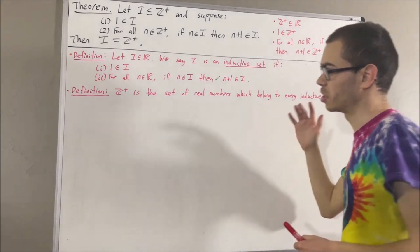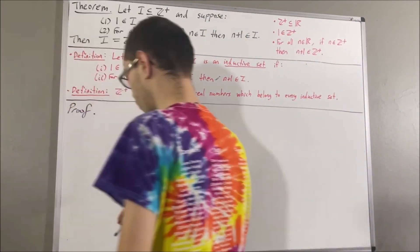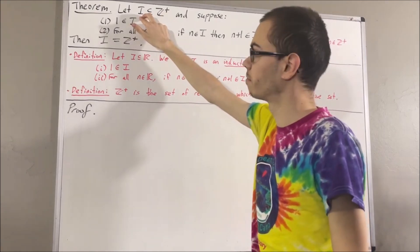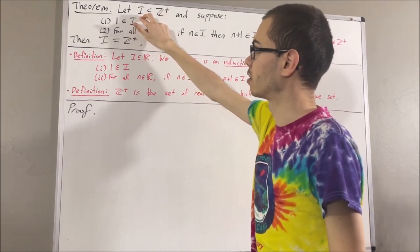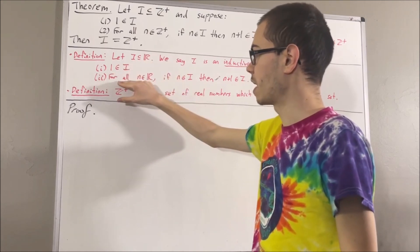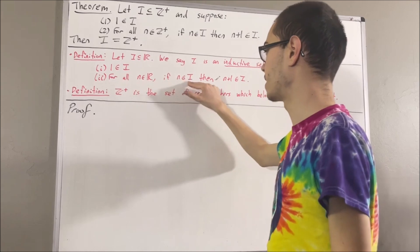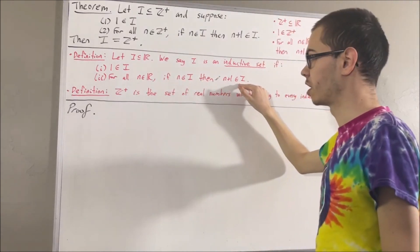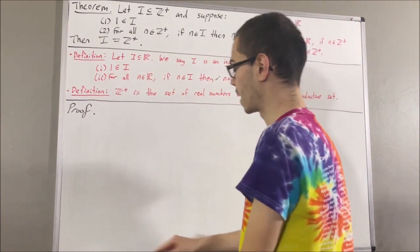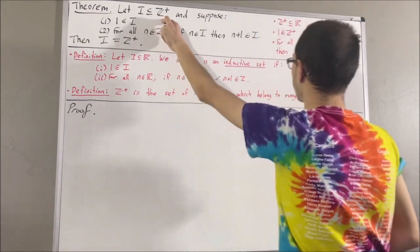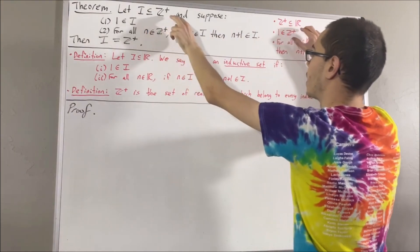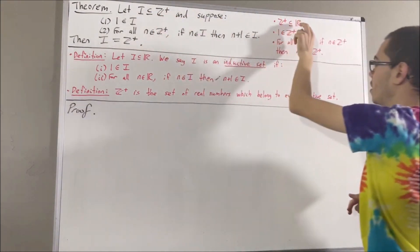Okay, so now let's get into proving this theorem. To start out the proof, we're first going to show that i is an inductive set. And to show that, we want to show that i is a subset of the real numbers, 1 is an element of i, and for all real numbers n, if n is an element of i, then n plus 1 is an element of i. To see how i is a subset of the real numbers, that comes from the fact that i is a subset of the positive integers, and the positive integers is a subset of the real numbers. So these two facts imply that i is a subset of the real numbers.